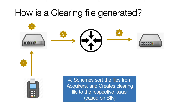Schemes sort the files received from various acquirers and create a final clearing file, then send it to the issuer. In this process, schemes also compute the interchange fee and various other fees and pass them along in the clearing file, which contains the final transaction amount. Schemes also provide add-on services like currency conversion to the various members.